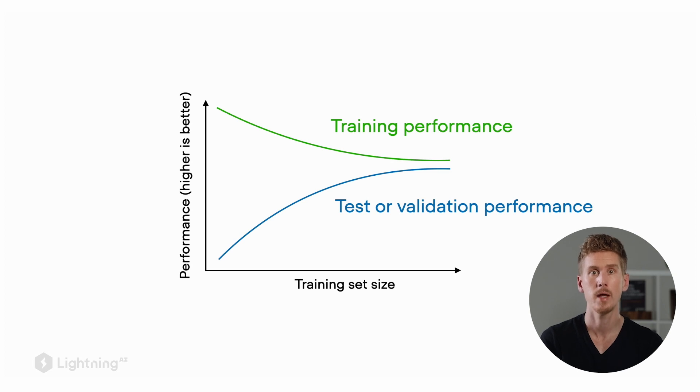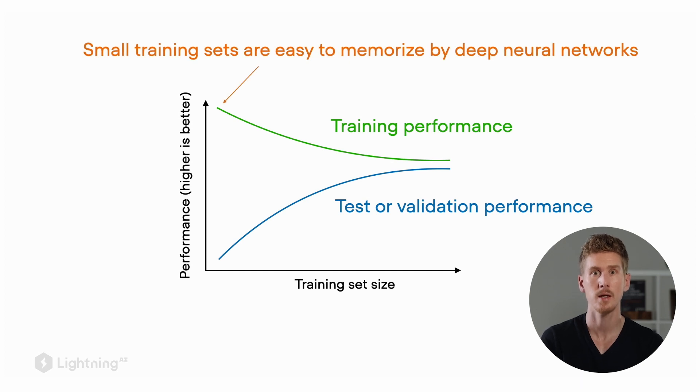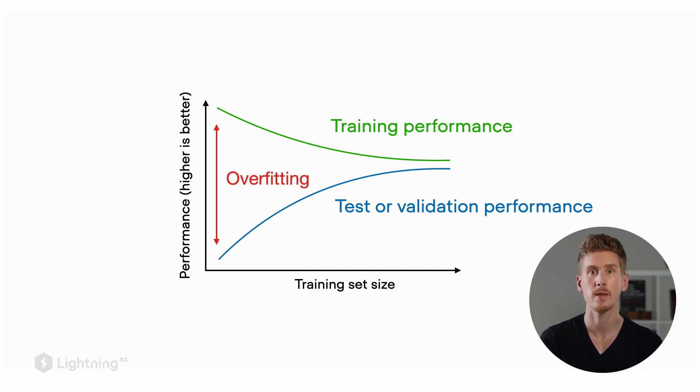On the other hand, what we really care about is the performance on new data, which we measure by the test or validation sets. The larger the dataset, typically the easier it is to train a model without overfitting. In this plot, we are visualizing the effect of overfitting, which is the gap between training and test set performance. Typically for machine learning, and especially deep learning models, the larger the dataset, the better. While the training set performance may go down, what we really care about is how the model performs on new data. We can see that the test and validation accuracy actually improves as we improve the training dataset size. This plot highlights the problem of overfitting and relates the training performance to the test and validation set performance.